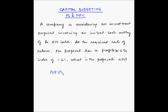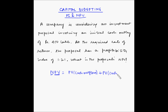We have to find the net present value. Net present value is where first we find the present value of all cash flows — including the inflows and outflows — and then we net them, meaning we add them. So NPV is equal to present value of cash outflows plus present value of cash inflows.